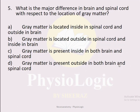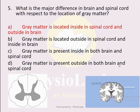MCQ number five: What is the major difference in the brain and spinal cord with respect to the location of gray matter? Option A: gray matter is located inside in spinal cord and outside in brain. Option B: outside in spinal cord and inside in brain. Option C: inside in both. Option D: outside in both. The correct option is A.